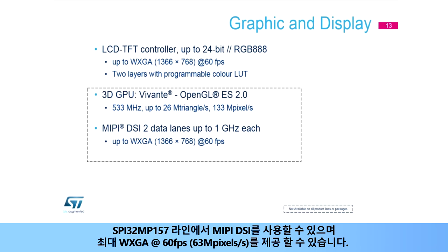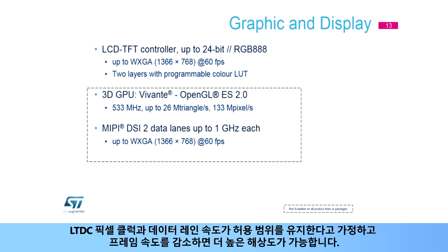A display serial interface, or MIPI DSI, is available on the STM32 MP157 line and can provide up to WXGA at 60 frames per second or 63 megapixels per second. Higher resolutions are possible with a reduced frame rate, assuming the LTDC pixel clock and data lane rate remain in the allowed range.